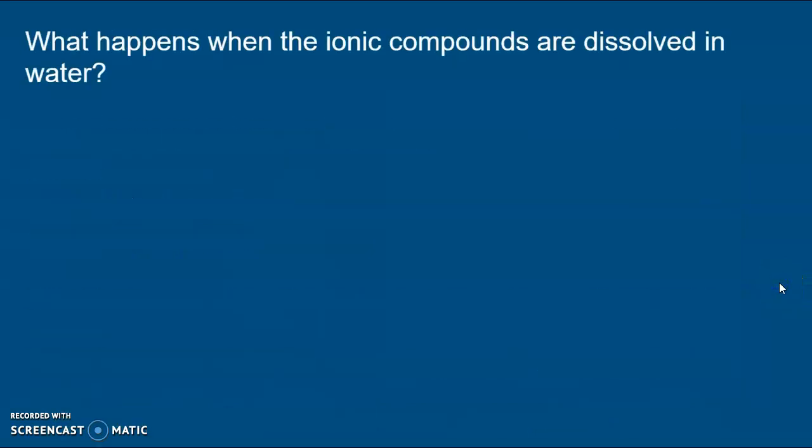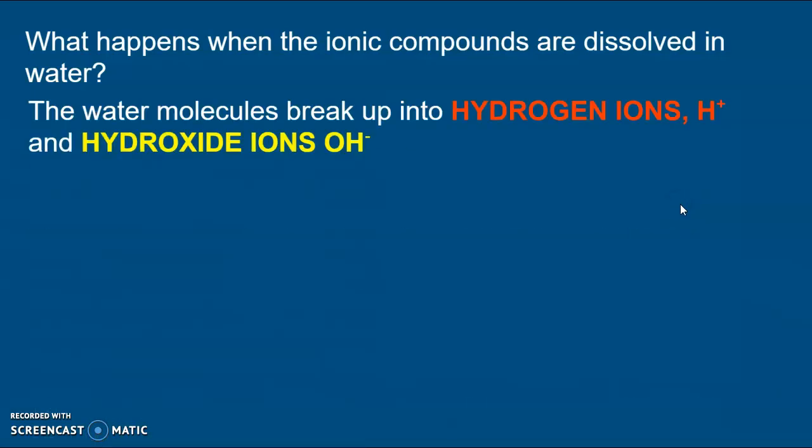So what actually happens when an ionic compound is dissolved in water? Well the ionic compound itself splits up so the ions are floating around, but also the water molecules break up into H+ hydrogen ions and OH- hydroxide ions. My pants are slightly on fire here because there's a little bit more to it than this but this is all we need to know for GCSE.